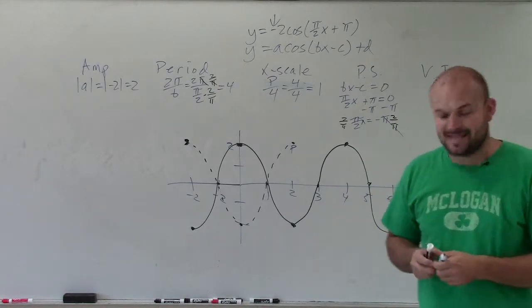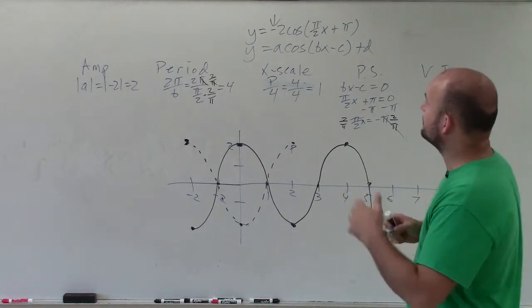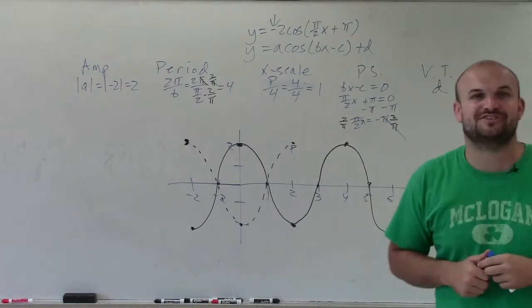So there you go, ladies and gentlemen. That is how you graph the equation of cosine, give it a reflection, change in amplitude, and phase shift. Thanks.